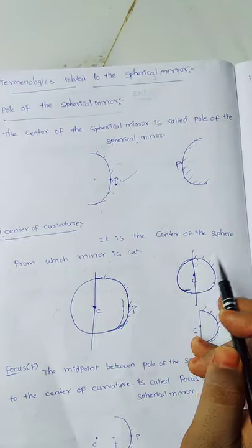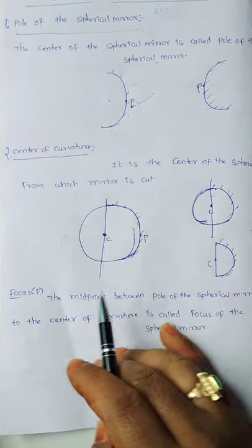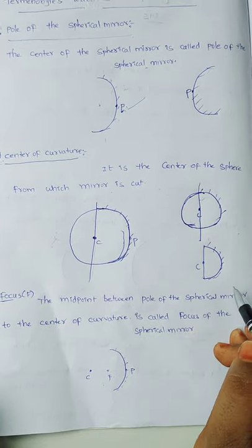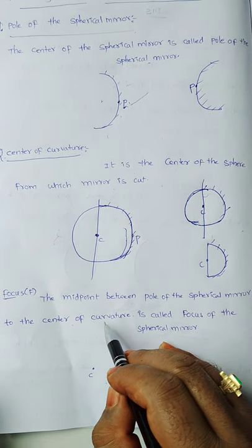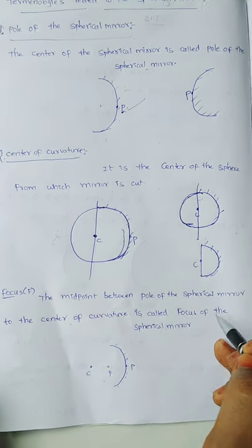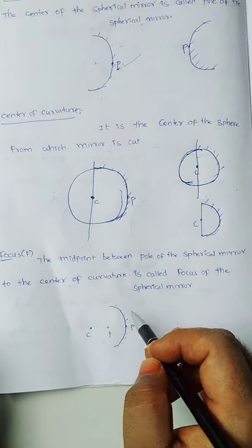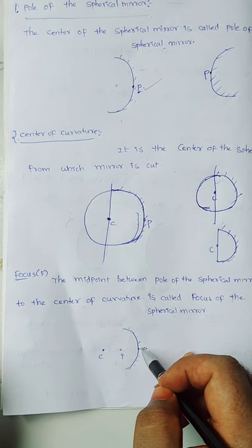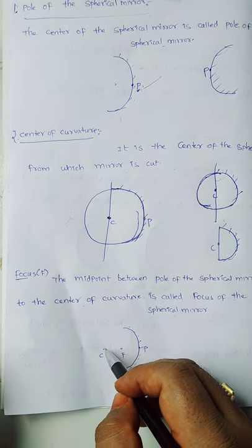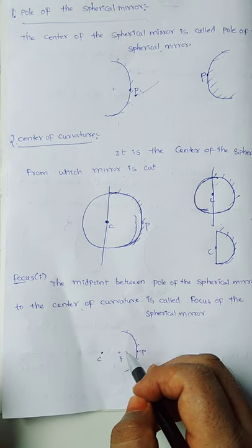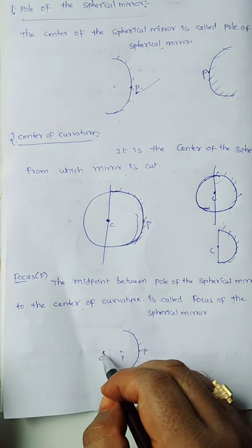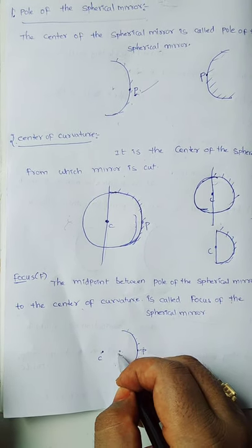Next one is focus. The midpoint between the pole of the spherical mirror and the center of curvature is called the focus of the spherical mirror. For example, if you take this concave mirror, it is the pole of the spherical mirror; marking the center of curvature, the midpoint between pole and center of curvature is the focus.